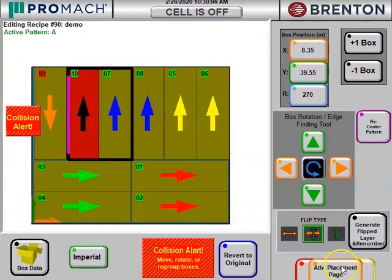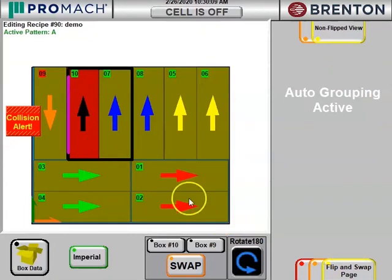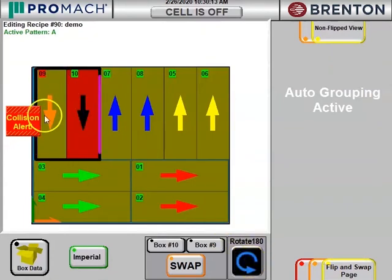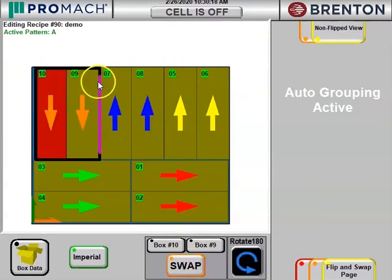We're going to spin box 10 around. And that's close. But now we need to swap the order because the box on the purple edge of the gripper, that has dropped first.